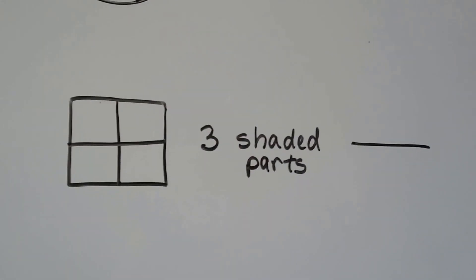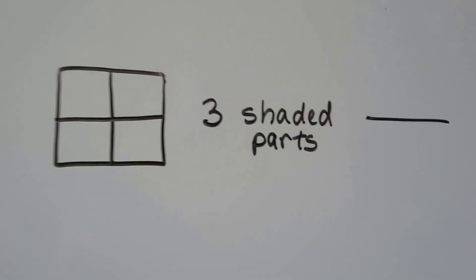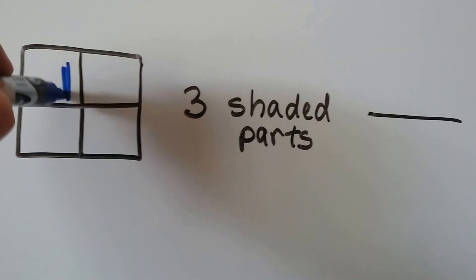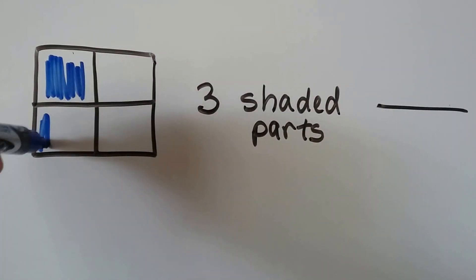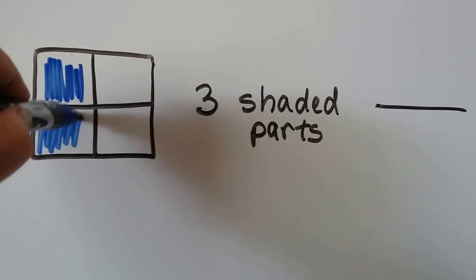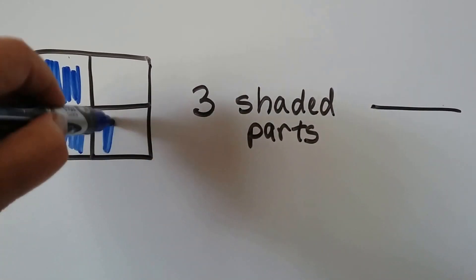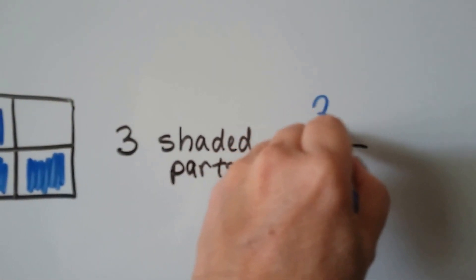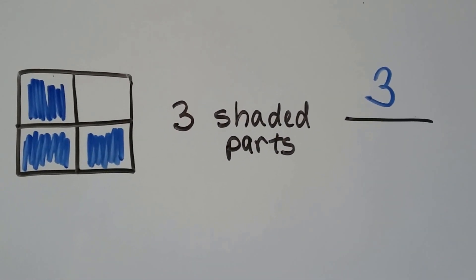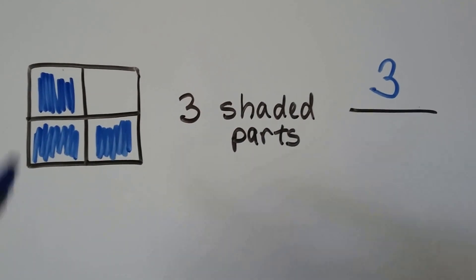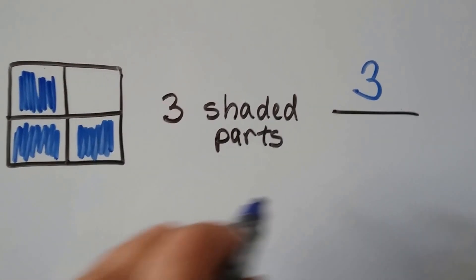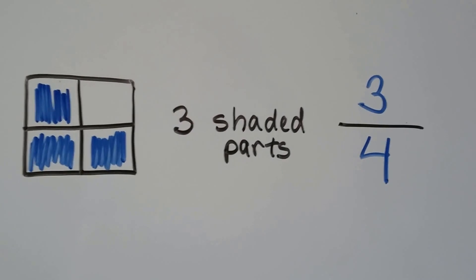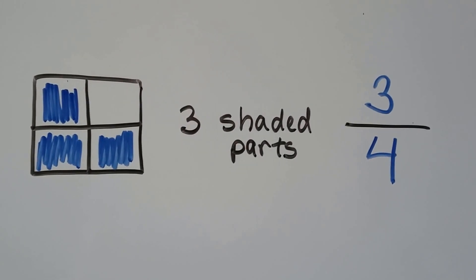Let's try this one. We're supposed to have three shaded parts. So let's make three shaded parts: one, two, three. We have three shaded parts. And how many equal parts are there? One, two, three, four. Three fourths is shaded.